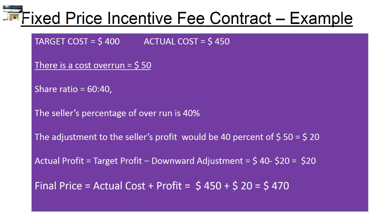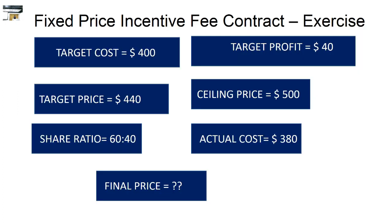In the same example, if we do a minor modification by changing the ceiling price to $460 instead of $500, then the final price would be $460 rather than $470. Because at any point of time, the buyer will not pay beyond the ceiling price, which is $460. In this example, since the actual cost was more than the target cost, the actual profit was less than the target profit.